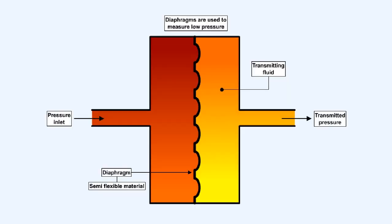A diaphragm is a sheet of a semi-flexible material, anchored at its periphery, and most often round in shape. It usually serves as a barrier between two chambers, moving slightly into one chamber or the other, depending on differences in pressure. Diaphragms are used to measure low pressures.